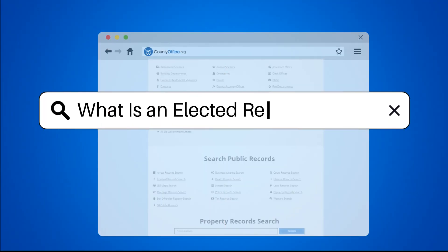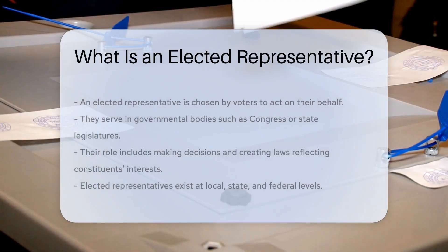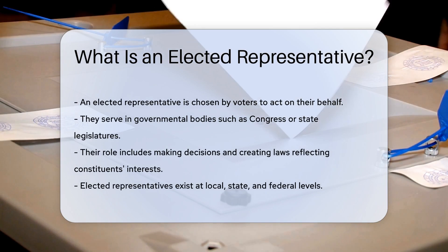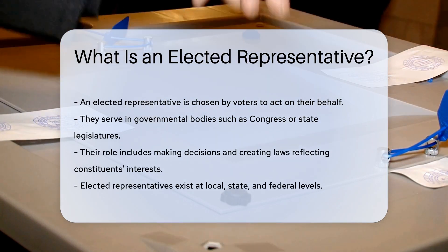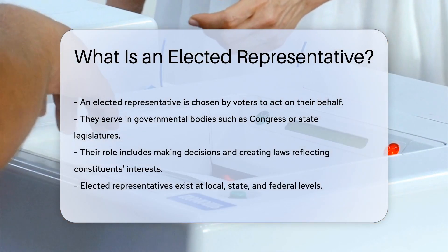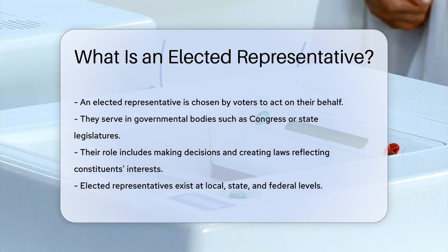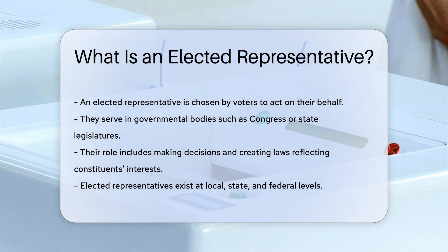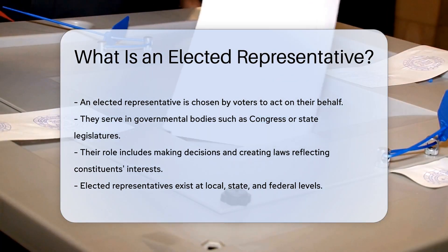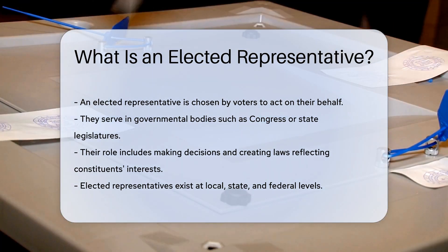What is an elected representative? An elected representative is someone chosen by voters to act on their behalf. This person serves in a governmental body, such as Congress or a state legislature. They make decisions and create laws that reflect the interests of their constituents. Elected representatives can be found at various levels of government, including local, state, and federal.